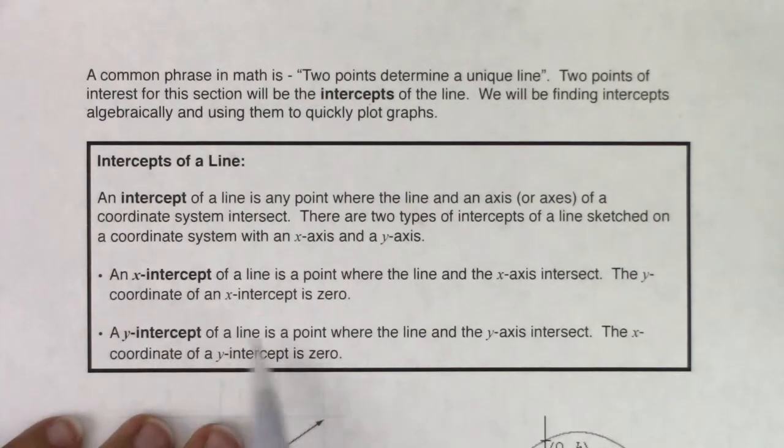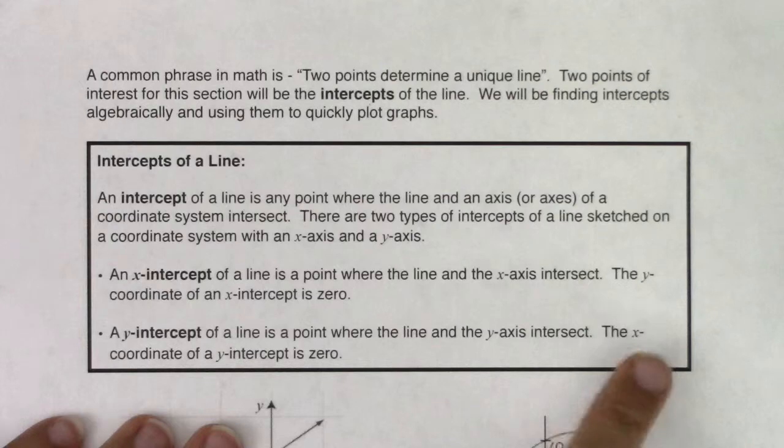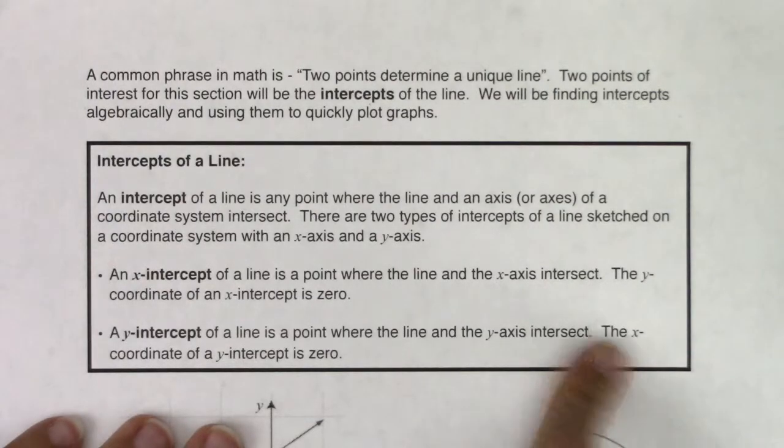A y-intercept of a line is a point where the line and the y-axis intersect. The x-coordinate of the y-intercept is zero. So take note, when you have the y-intercept, it's the x-coordinate that's zero. When you have the x-intercept, it's the y-coordinate zero. So it's the other one that zeroes out.